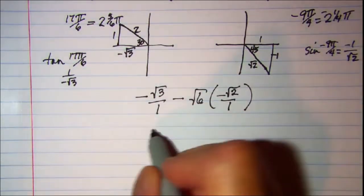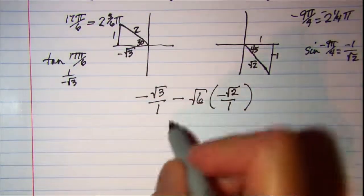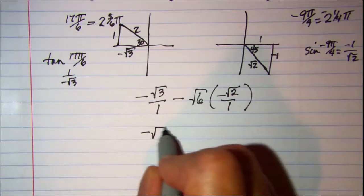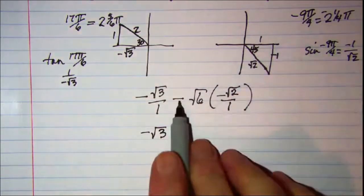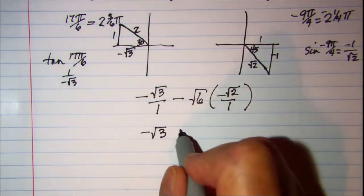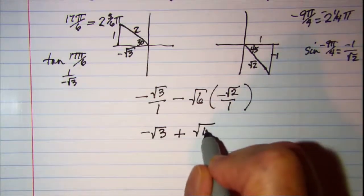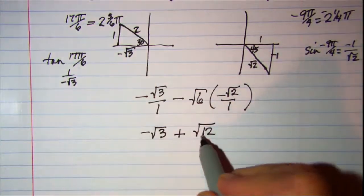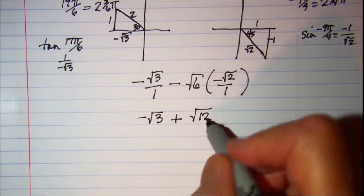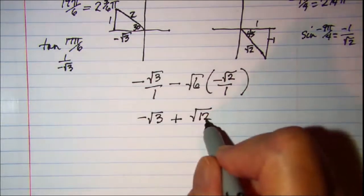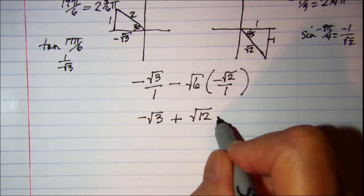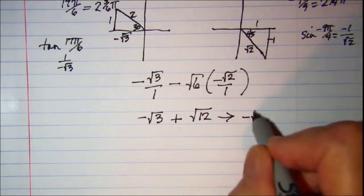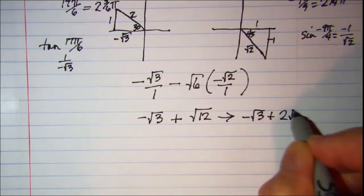Now if we do our math here we have these ones in the denominator. Negative root 3. A negative times a negative is positive root 12. And we know that the square root of 12 is 2 root 3. So this is negative root 3 plus 2 root 3, which gives us root 3.